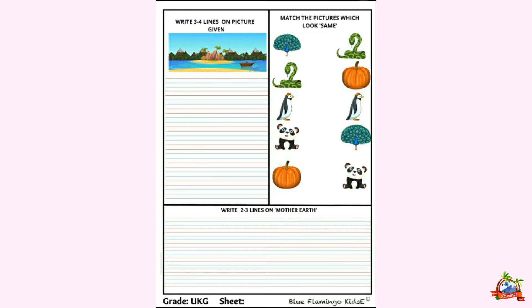Write three to four lines on the picture given. As you all can see, a very nice picture is given over here. There are trees, mountains, and water. There are many things. And what we have to do is, we have to describe this picture in three to four lines.